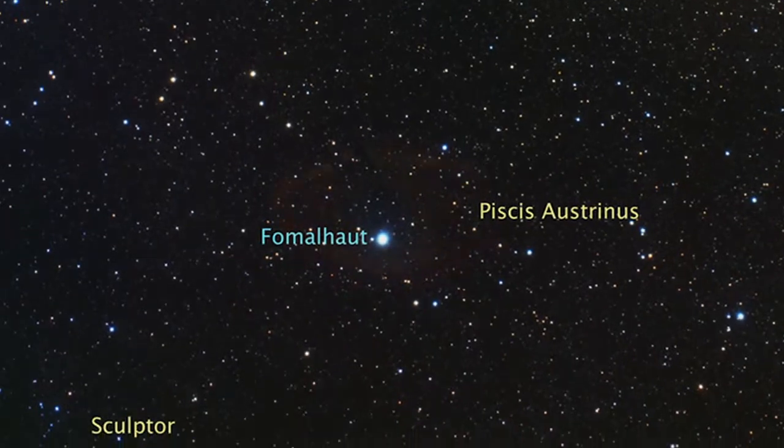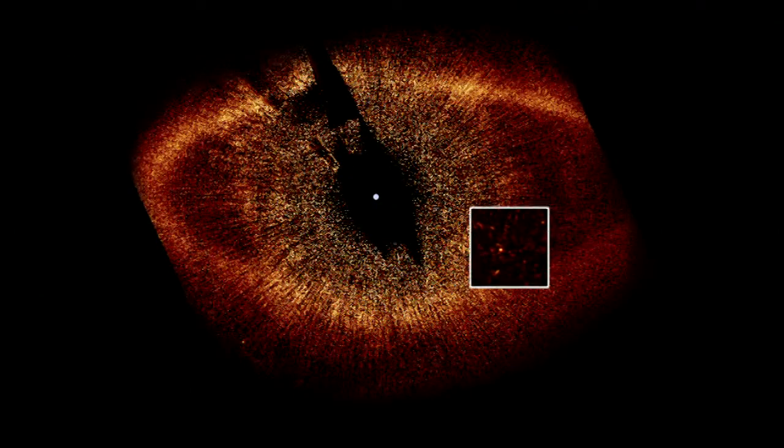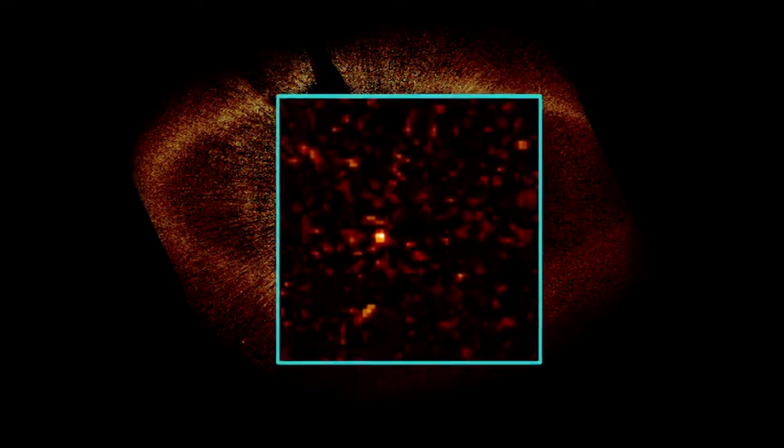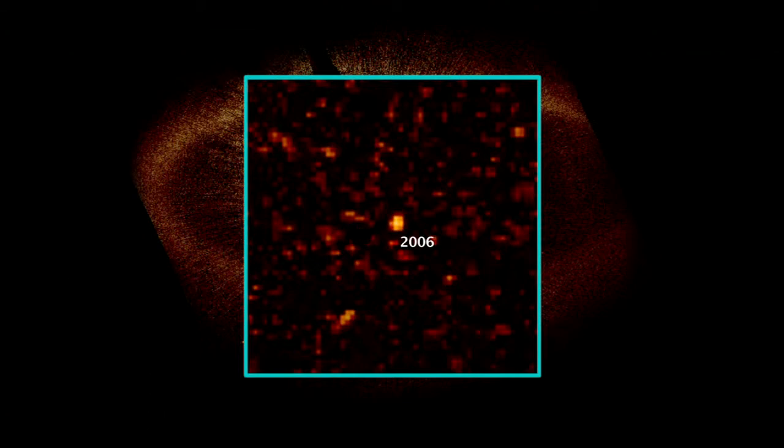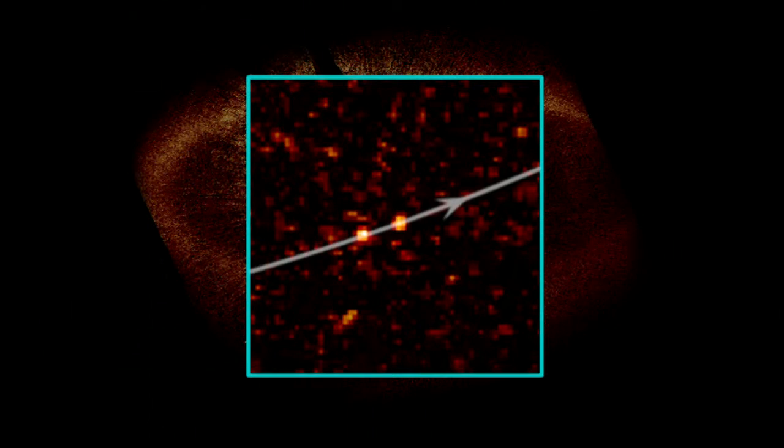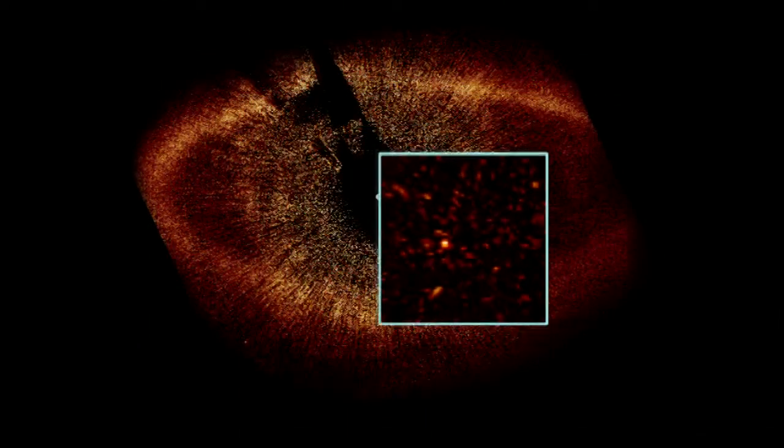So just how did the research team find it? By looking at a star they studied two years before. You blink backwards and forwards between the 2004 image and the 2006 image and you look for the objects that either don't disappear or move a very small amount. Small amount relative to the star means it's part of the same system.